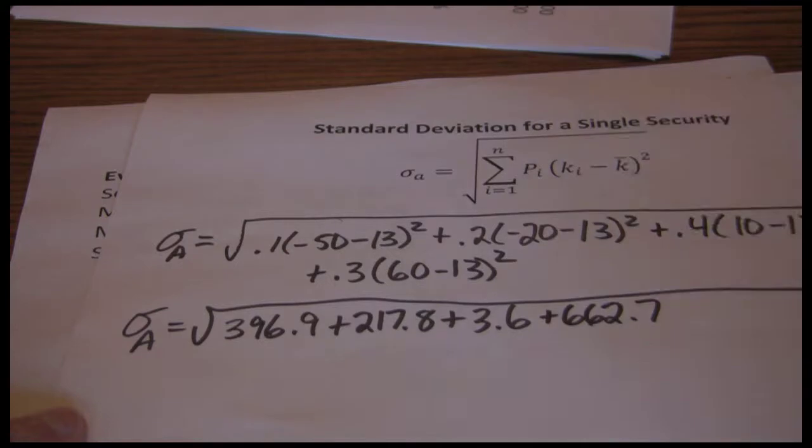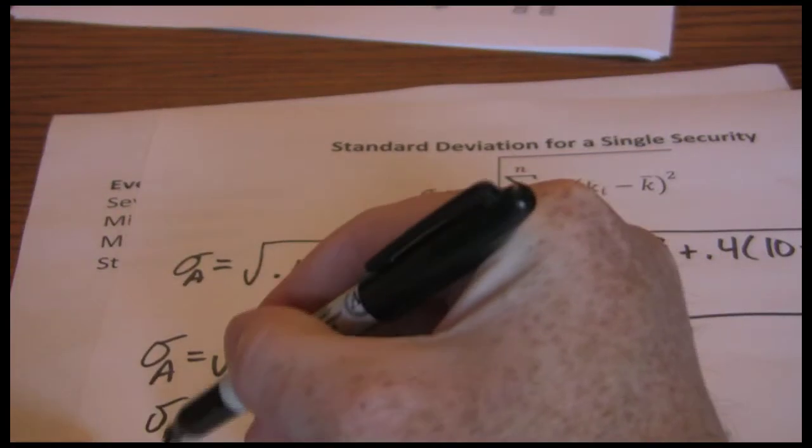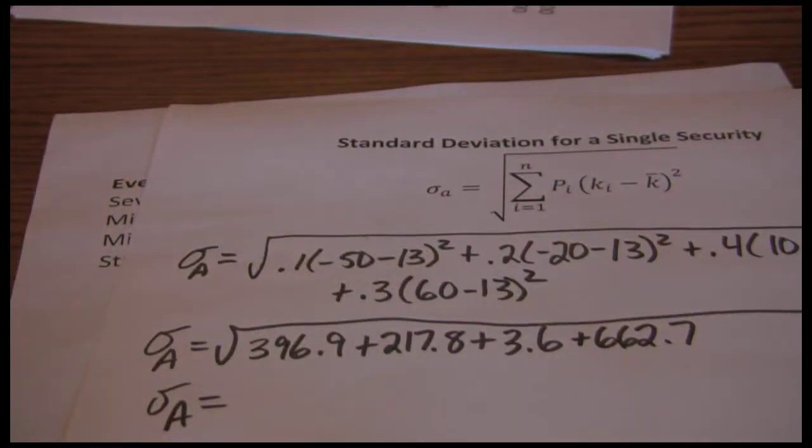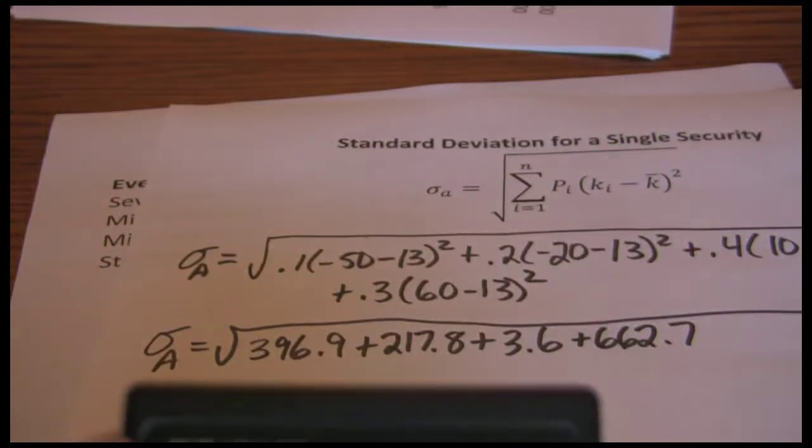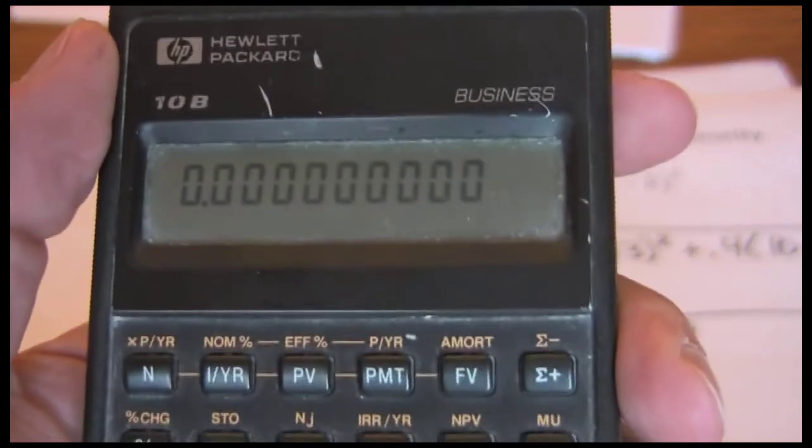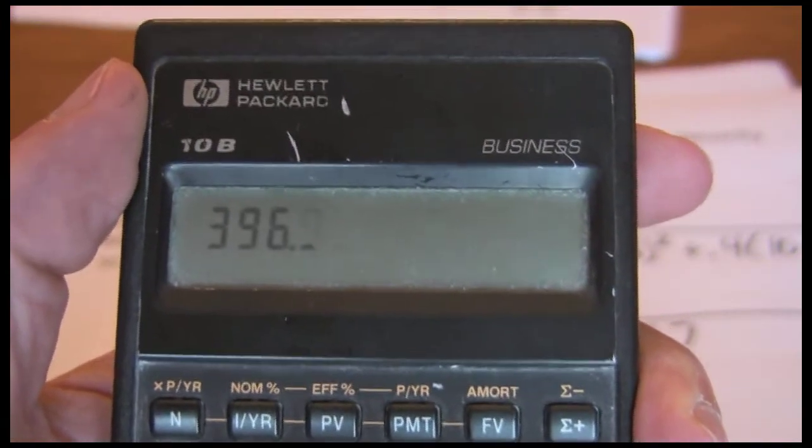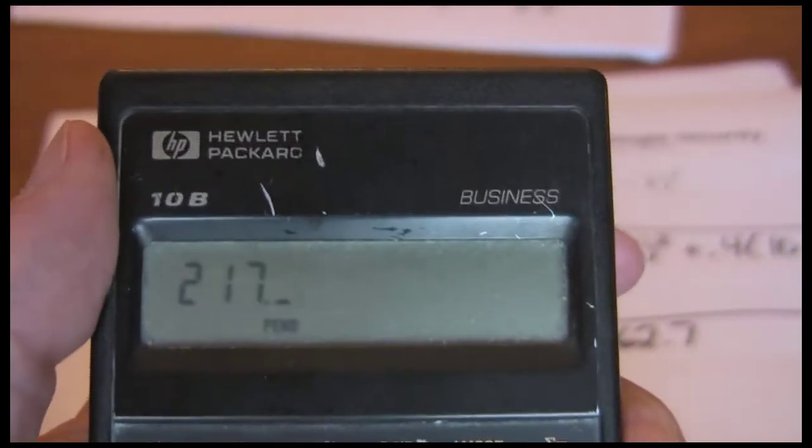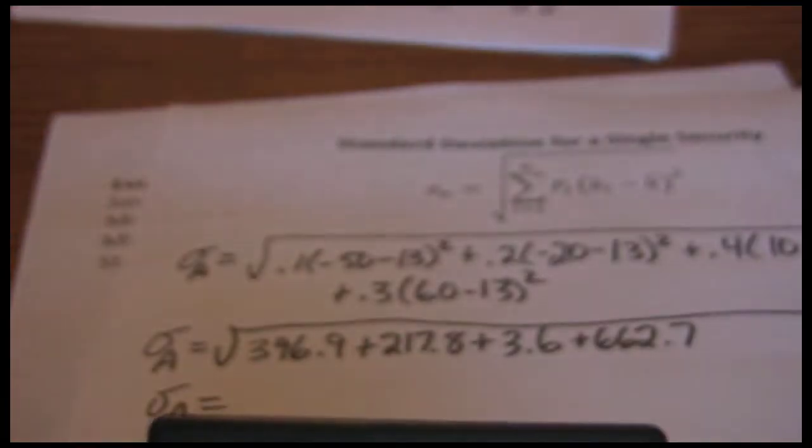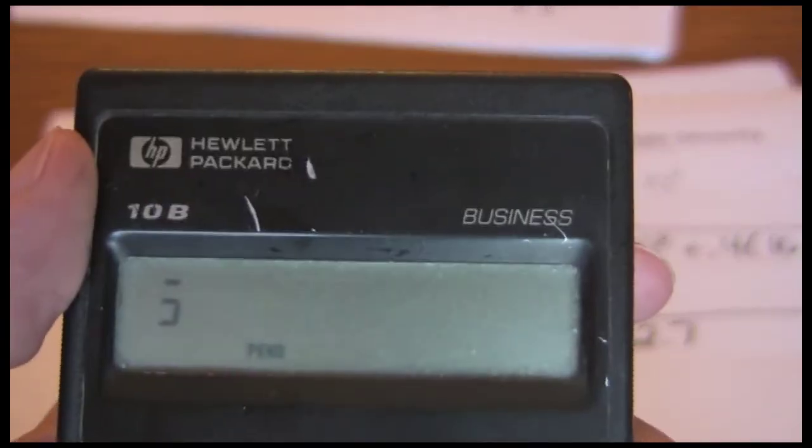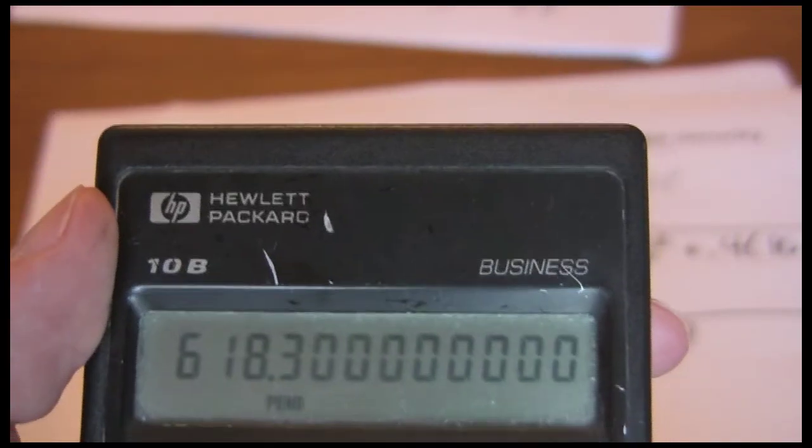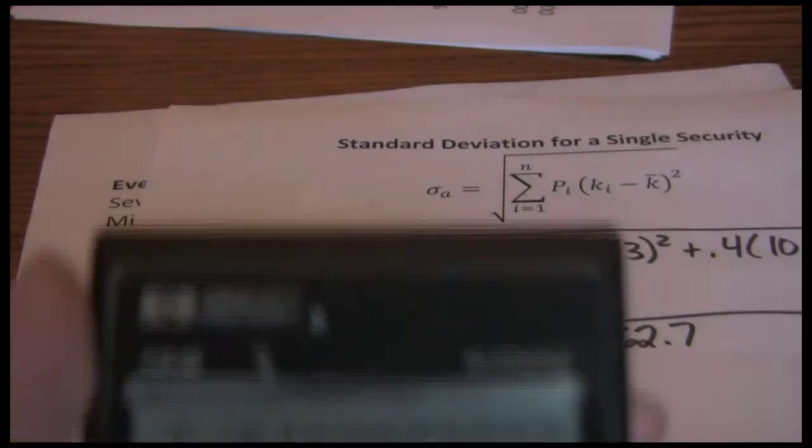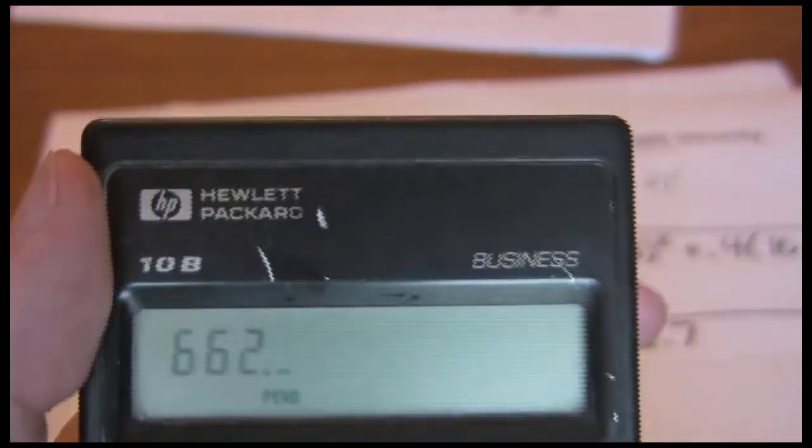Now we add those up and take the square root. So 396.9 plus 217.8, plus 3.6, plus 662.7, gives us 1,281.